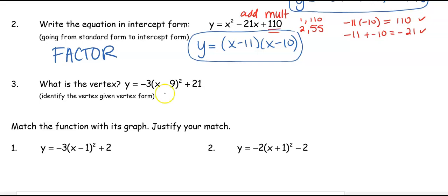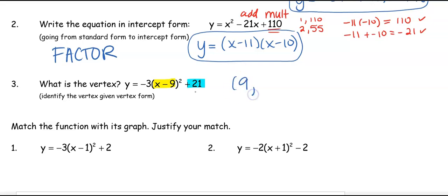For the vertex: remember, the vertex is your point moving from (0, 0) based on those transformations. Here I have gone right 9, making my vertex at a positive 9, and up 21, making the y-value a positive 21.